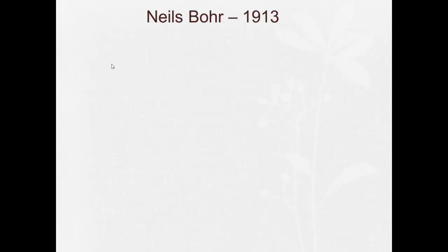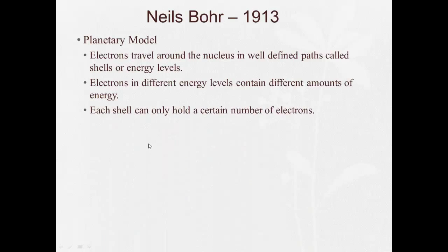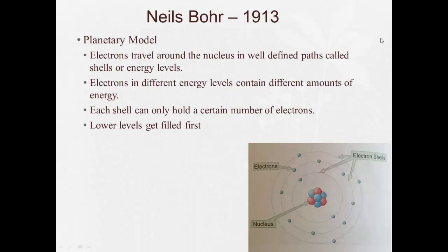So next, a few years later, this physicist Niels Bohr came up with his planetary model. And he said that electrons travel around the nucleus in well-defined paths called shells, or energy levels. He said that electrons in different energy levels contain different amounts of energy. Each shell can only hold a certain number of electrons. And he said that the lower levels get filled first.